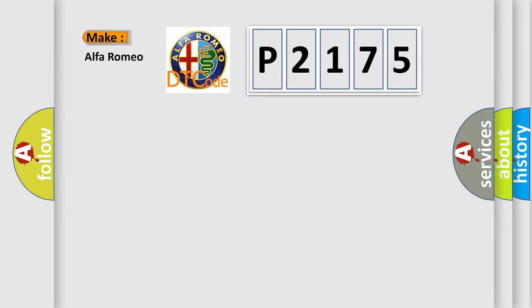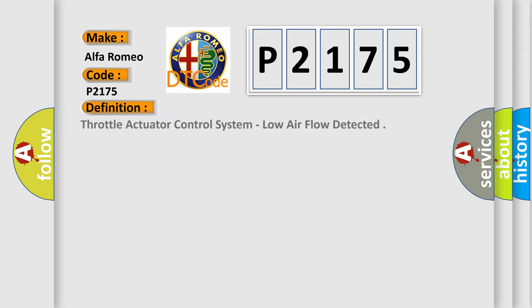So, what does the diagnostic trouble code P2175 interpret specifically for Alfa Romeo car manufacturers? The basic definition is throttle actuator control system, low air flow detected.